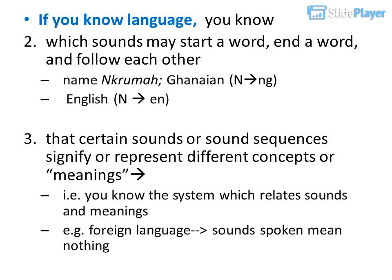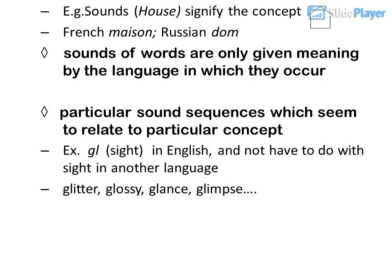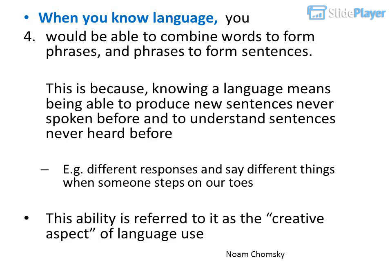You know that certain sounds or sound sequences signify or represent different concepts or meanings — you know the system which relates sounds and meanings. For example, in a foreign language, sounds spoken mean nothing to you. The sounds for 'house' in English, 'maison' in French, or 'dom' in Russian are only given meaning by the language in which they occur. When you know a language, you would be able to combine words to form phrases, and phrases to form sentences.